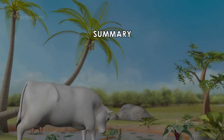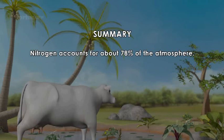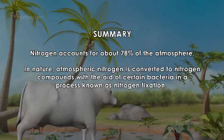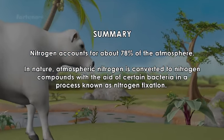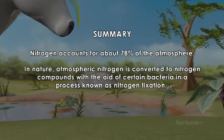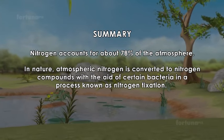Summary: Nitrogen accounts for about 78% of the atmosphere. In nature, atmospheric nitrogen is converted to nitrogen compounds with the aid of certain bacteria in a process known as nitrogen fixation. Rhizobium bacteria fix nitrogen in leguminous plants.